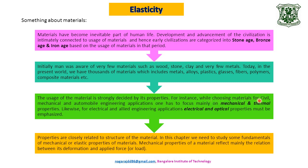The usage of a material is strongly decided by its properties. For instance, while choosing materials for civil, mechanical, and automobile engineering applications, one has to focus mainly on mechanical and thermal properties. Similarly, for electrical and allied engineering applications, electrical and optical properties must be emphasized. Properties are closely related to the structure of the material. In this chapter, we need to study some fundamentals of mechanical or elastic properties of materials.